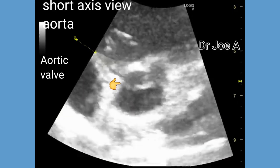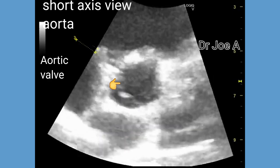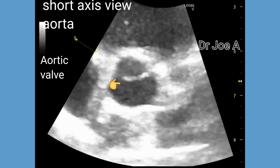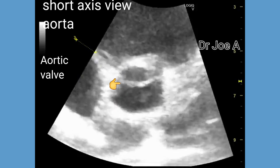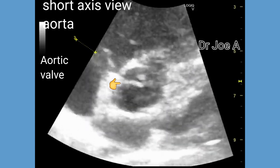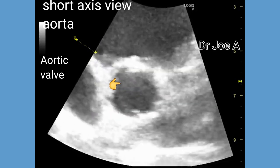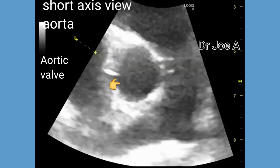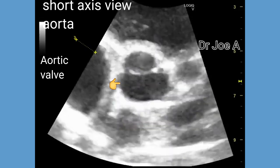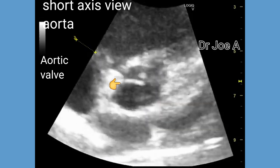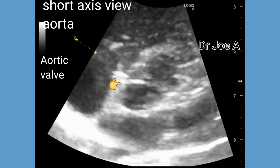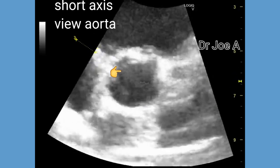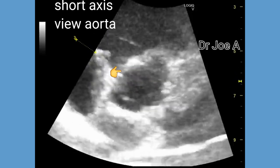Next, we study the aortic valve in the short-axis view. In this case, there are three cusps of the aortic valve, and hence it is a tricuspid aortic valve, which is normal. In some cases, and quite rarely, we may see two cusps or even four cusps of the aortic valve.